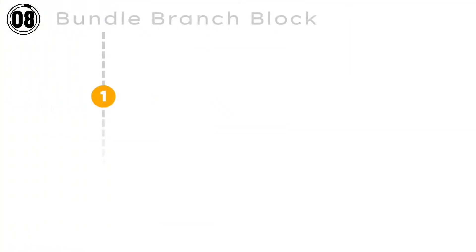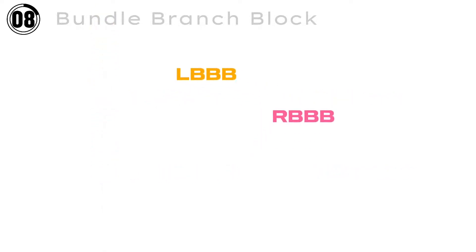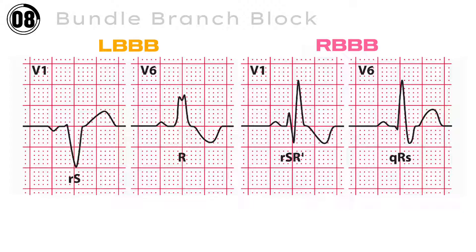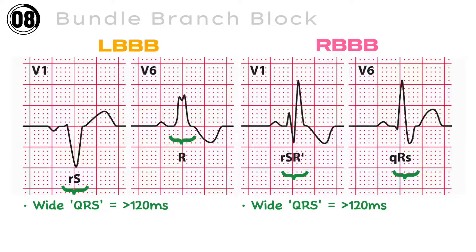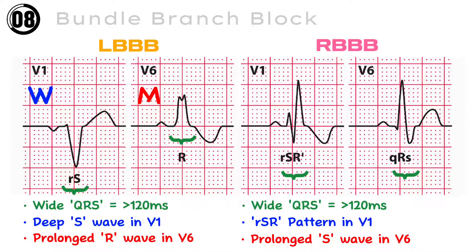ECG number 8: Bundle Branch Block. There are two types: left bundle branch block and right bundle branch block. In both, the QRS complexes are wider, with duration more than 120 milliseconds. In the left bundle branch block, there is a deep S wave in lead V1 and a prolonged R wave in lead V6, making a W pattern in V1 and an M pattern in V6. In the right bundle branch block, there is an RSR pattern in V1 and a prolonged S wave in V6, making an M pattern in V1 and a W pattern in V6.